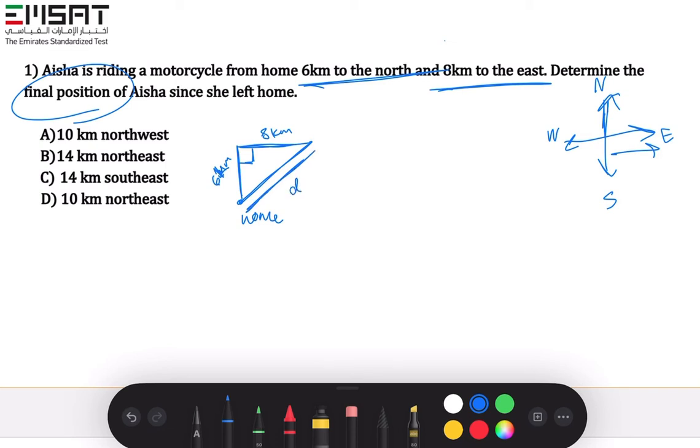So to find the length of this we need to use the Pythagorean theorem for right triangles. So Pythagorean theorem is gonna be D equals to square root this plus this. That's gonna be six, and then we're gonna square it, plus eight kilometers squared.